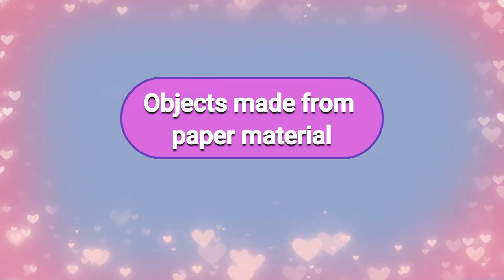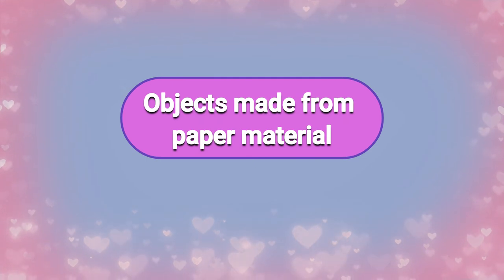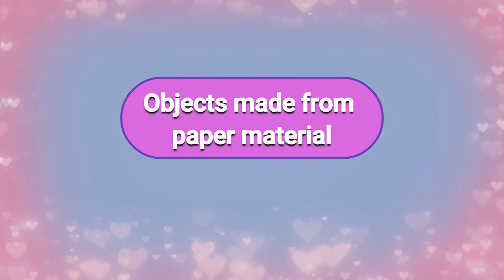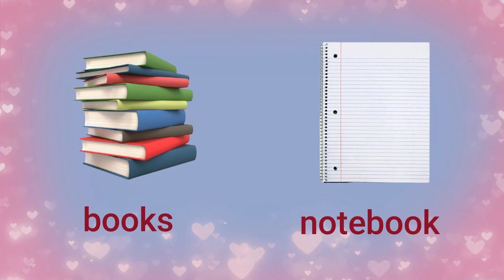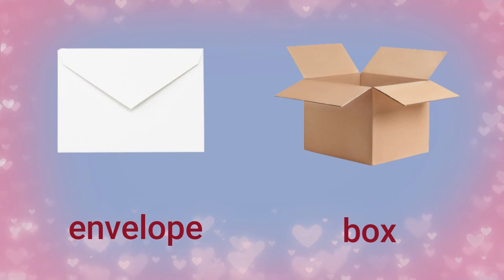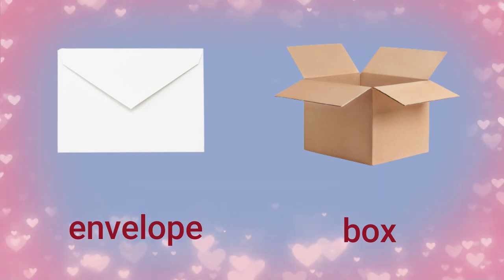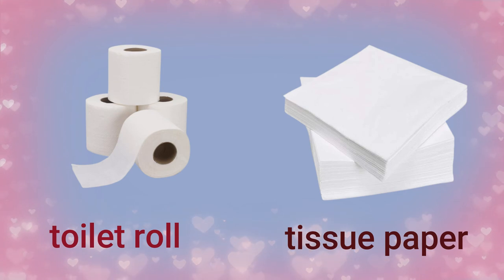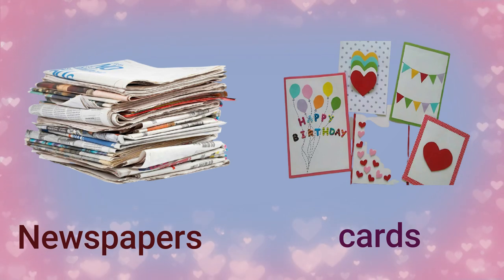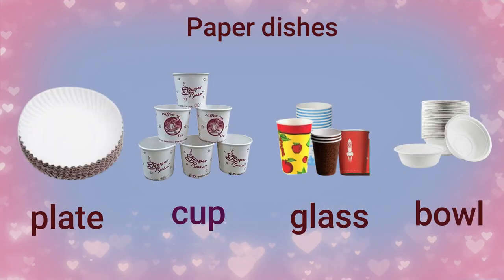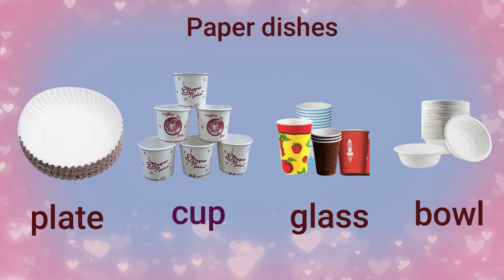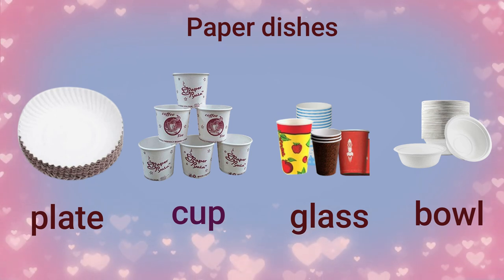Next, let's see what objects are made from paper materials. These include books, notebooks, envelopes, boxes, all kinds of packing boxes or cartons, toilet rolls, tissue papers, newspapers, cards, paper dishes like paper plates, paper cups, paper glasses, and paper bowls.